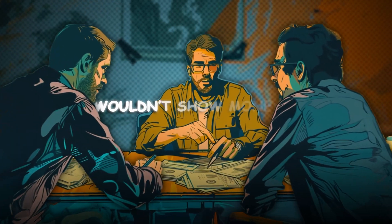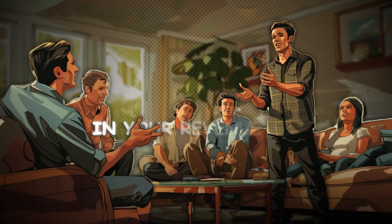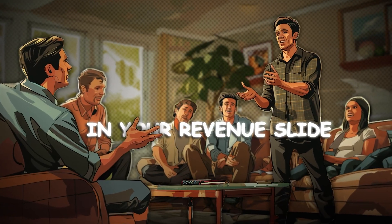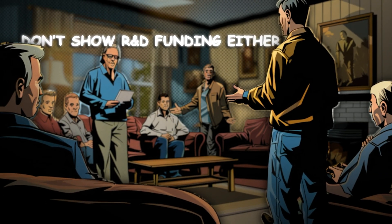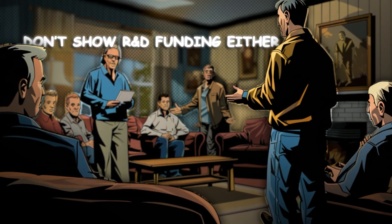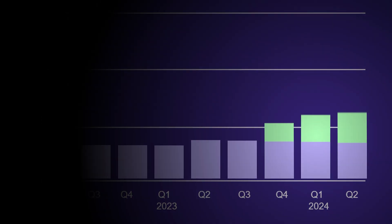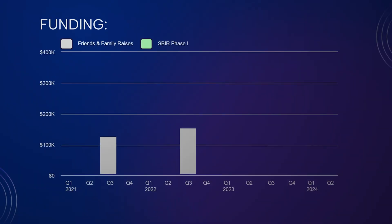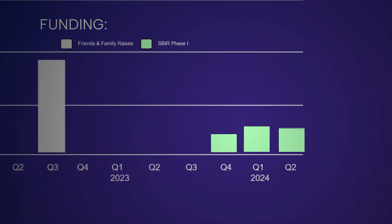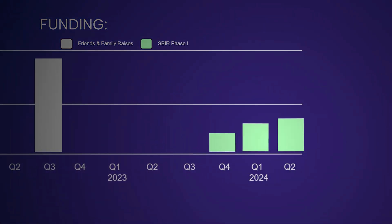You wouldn't show money from a friends and family or angel round in your revenue slide, so don't show SBIR, BAA, OTA, CSO, or other R&D funding either. Instead, take the R&D dollars off the revenue slide and move them to the funding slide. So easy — and yet so many companies end up in the trash because of this.